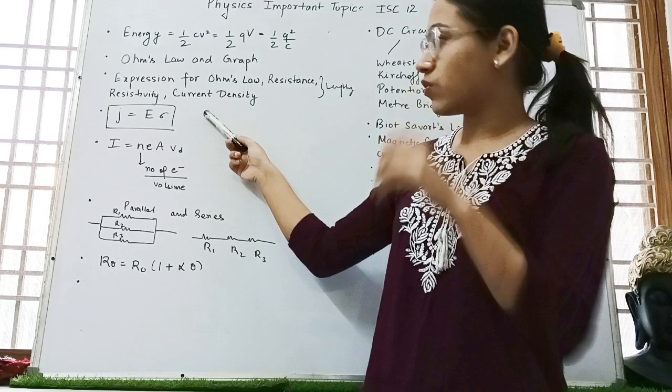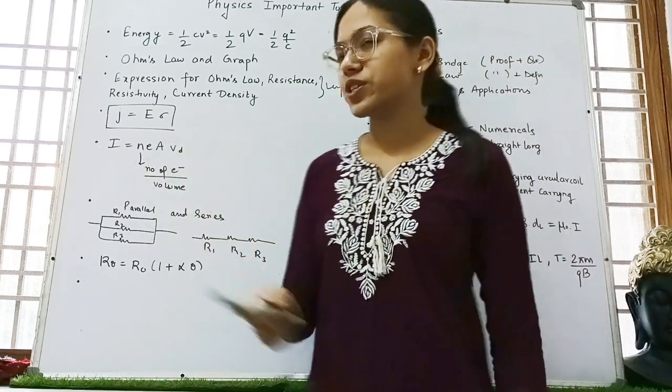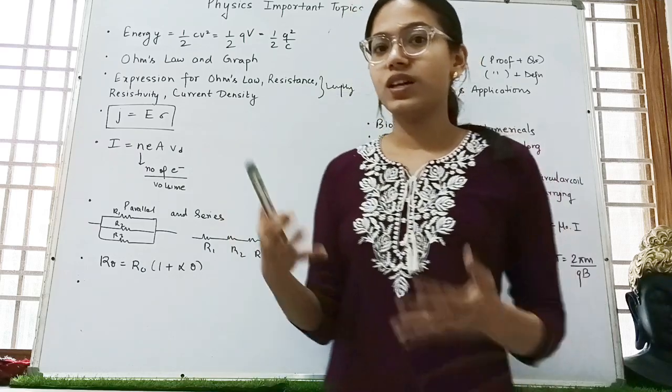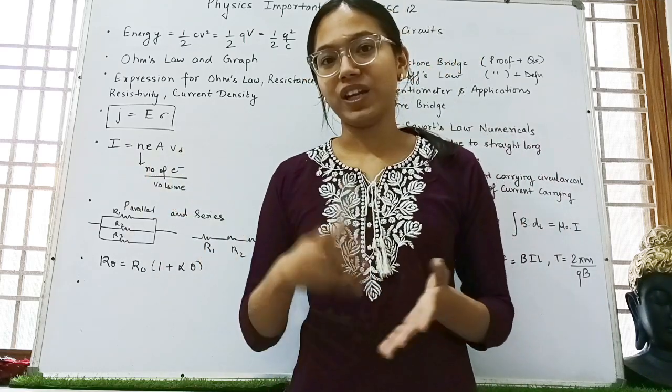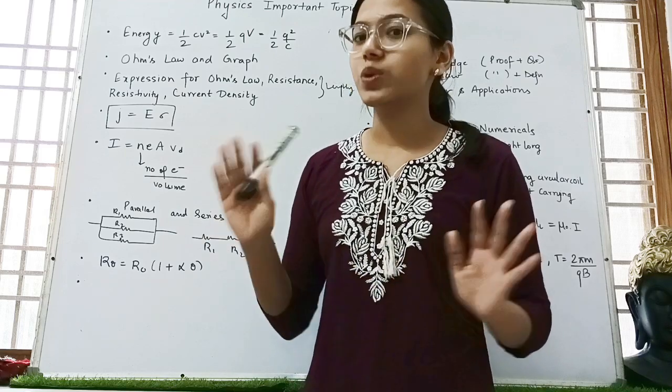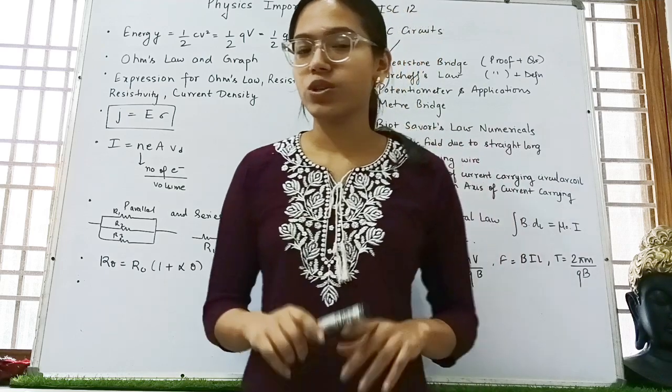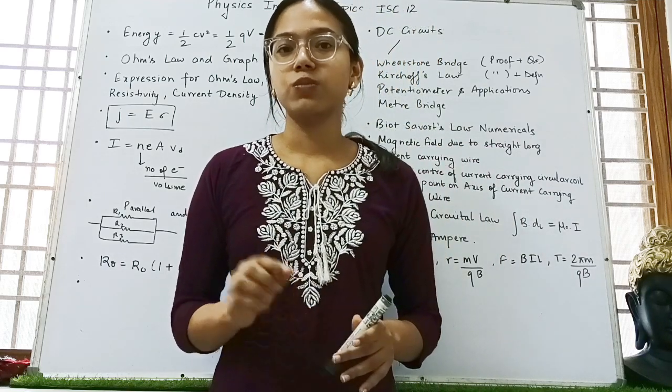Then again this formula, then I is equal to nAvD. Here the question was asked, what is the symbolism of N? Many of the students wrote number of electrons. That was wrong. You have to write number of electrons by volume. So your conceptual clarity should be really good.